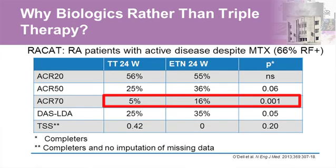Why biologics rather than escalating to triple therapy? The RACAT study — which has been interpreted in different ways — for ACR70, which is effectively remission, shows a three-fold increase with a high p-value, as well as for other aspects. I accept that you could look at different aspects of these studies and come to different interpretations, but these were the interpretations made for the EULAR guidelines.